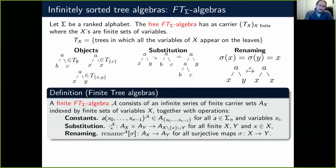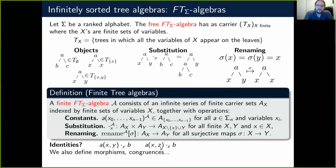For renaming, if we have a map sigma that goes from X to Y, it defines an operation rename_sigma that goes from sort X to sort Y. Note that sigma is required to be surjective, to respect our condition in the tree algebra that sort X corresponds to trees in which all variables of X appear on the leaves. For identities, two expressions that denote the same tree in the free algebra must evaluate to the same element in any finite algebra.